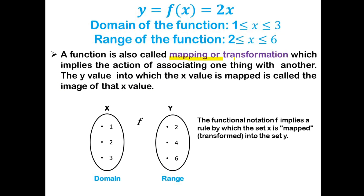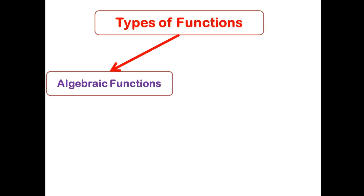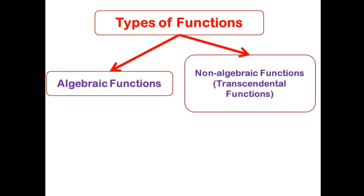A function is also called mapping or transformation, which implies the action of associating one thing with another. The y value into which the x value is mapped is called the image of that x value. So the image of 1 is 2, the image of 2 is 4, and the image of 3 is 6 for the function y equals 2x.